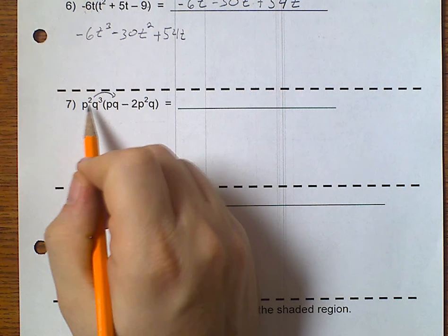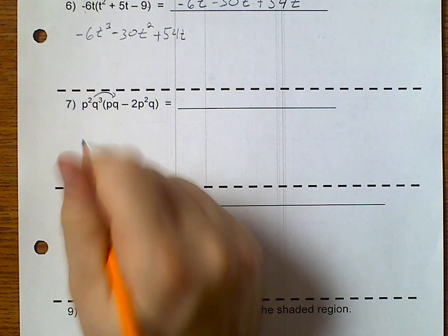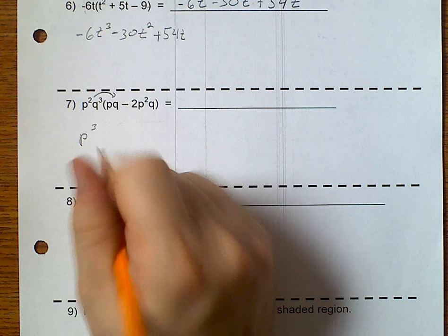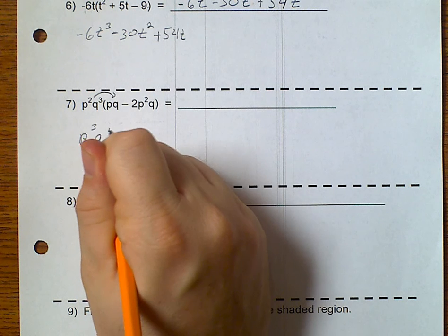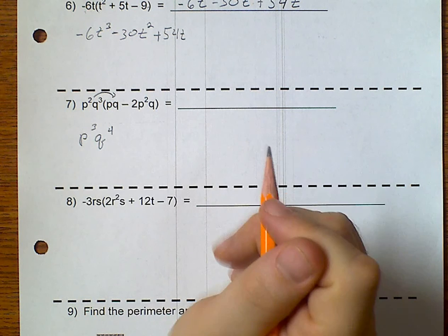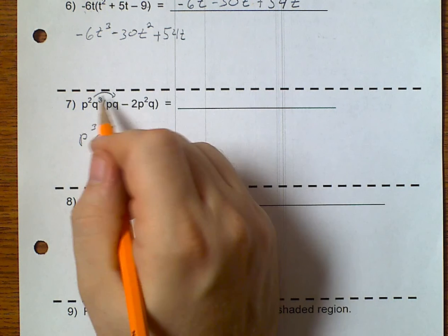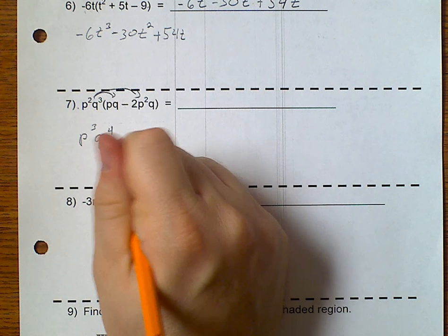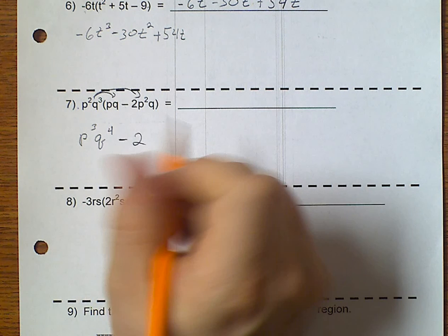Again, I need to distribute. So, p squared times p would give me p to the 3rd. q to the 3rd times q would give me q to the 4th. Well, there's no number, and there's a negative 2. So, I'm just going to go ahead and put minus 2.